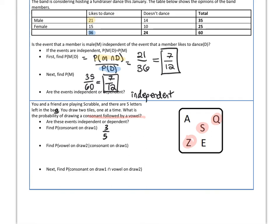What about getting a vowel on draw 2, given that I got a consonant on draw 1? I'll scratch out one consonant — let's say Z. There are still two vowels, but now only four total letters, so the probability of getting a vowel on my second draw given a consonant on my first is two out of four. My events are dependent because drawing a consonant on the first draw affected my probability of getting a vowel on the second draw.